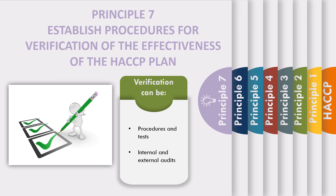Principle 7: Establish procedures for verification of the effectiveness of the HACCP Plan. This principle involves verifying whether the HACCP Plan is operating effectively. Verifying can take the form of procedures and tests, including random sampling and analysis. The most common forms of verification are internal and external audits.